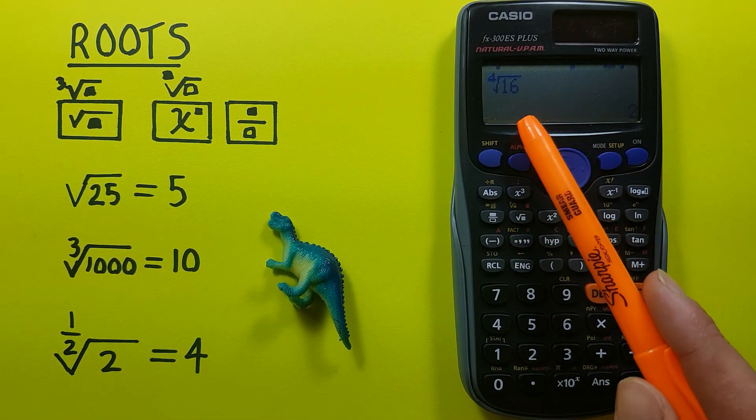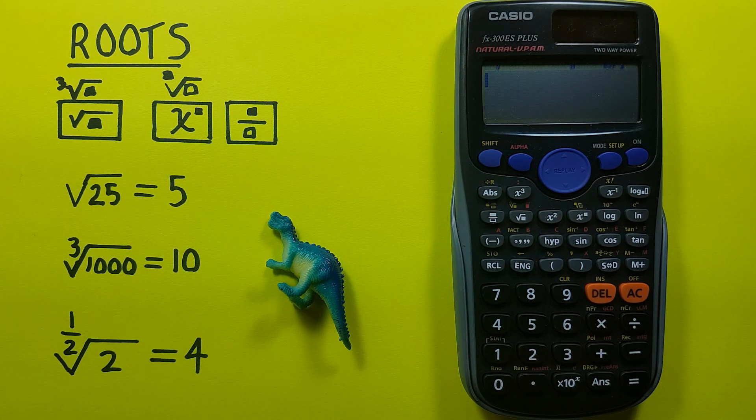So we have 16 to the fourth root and press equals, and we see 16 to the fourth root is 2.